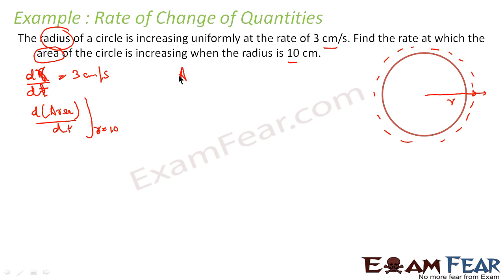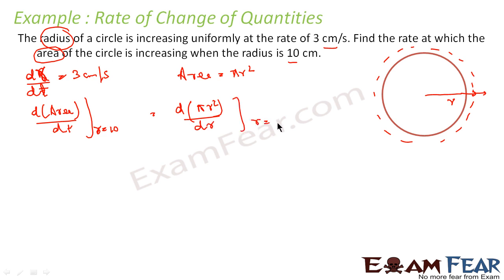Area is nothing but pi r squared. So differentiating: d(pi r squared)/dr gives 2 pi r. Note there is no dr/dr component here because we are differentiating r with respect to r only.